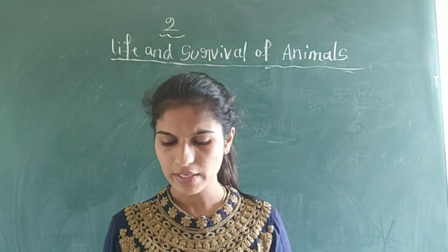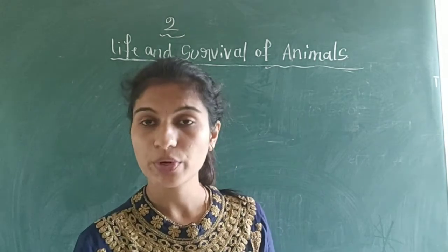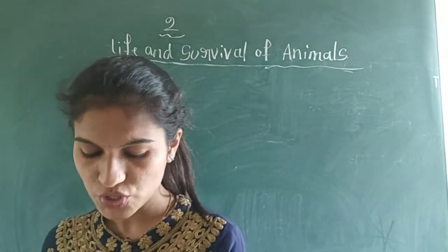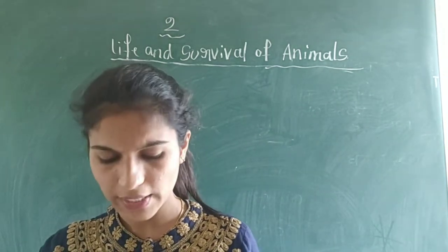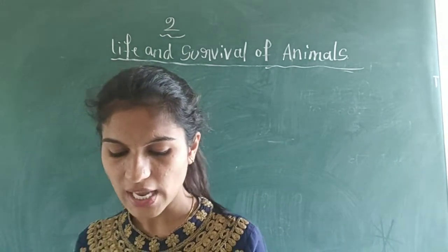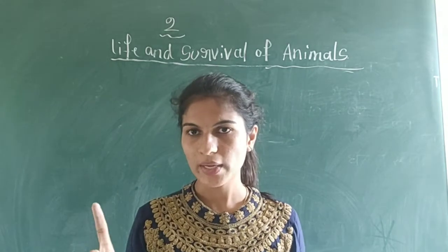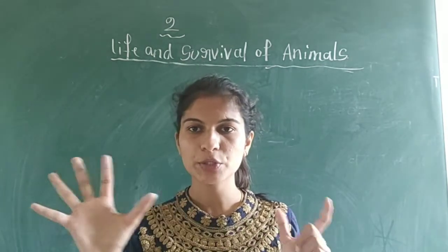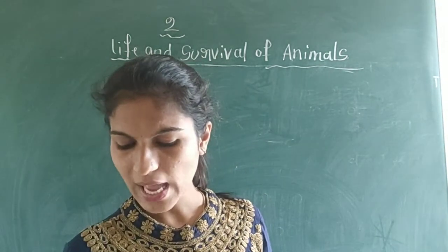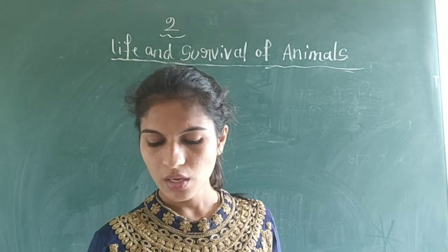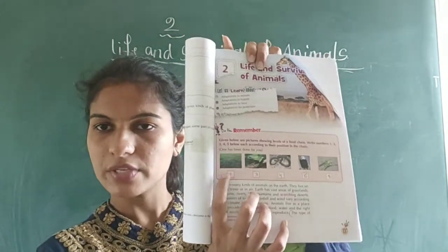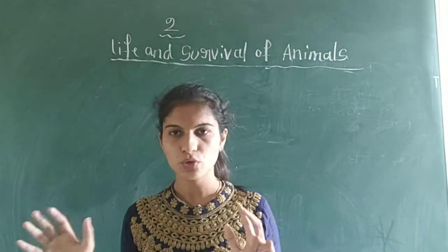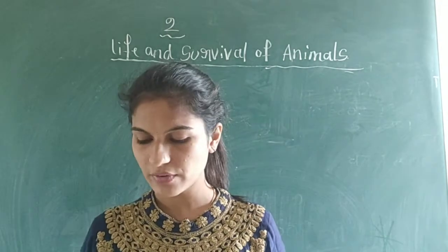Open page number 111. You can see a picture there. Given below are pictures showing levels of a food chain. Write numbers 1, 2, 3, 4, and 5 below each picture according to their position in the chain. They have given 5 pictures and you have to arrange them according to a food chain. The first one given is grass.